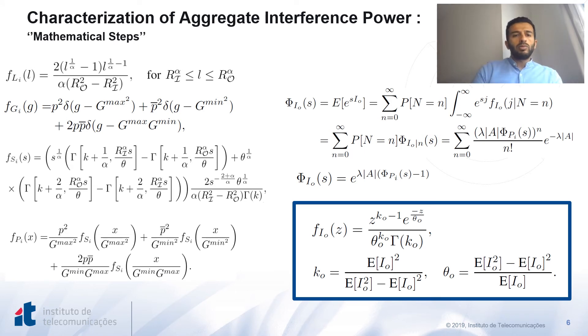These are some mathematical operations and derivations we performed for the characterization of the aggregate interference power. We start the procedure by finding the PDF of the interference caused by an individual node, which is given by F of P_i. Subsequently, the moment generating function of individual nodes is concluded. Consequently, we were able to generalize that to include all interferers using the law of total probability, and eventually deriving the moment generating function of the aggregate interference power.